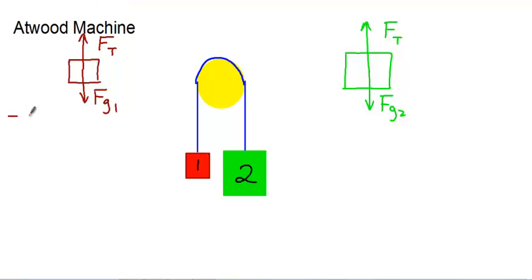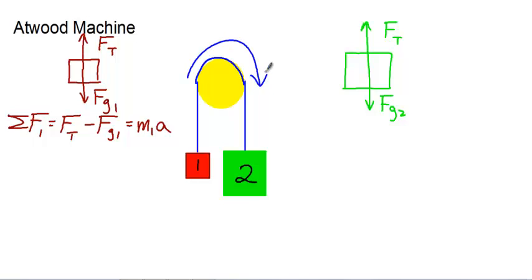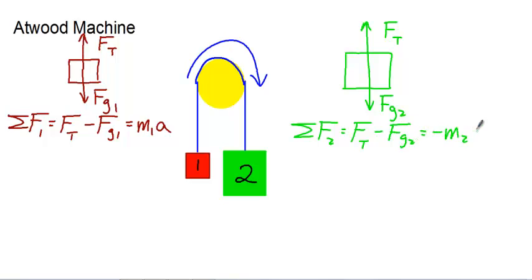We set up summation equations. For block one: F_T minus F_G1 equals M_1 times A. Common sense tells us the heavier mass falls and the lighter one rises, so block one accelerates upward in the same direction as tension — both positive. For block two: F_T minus F_G2 equals negative M_2·A, because block two accelerates downward. We could have made down positive, but since F_T on block one was defined as positive upward, block two's acceleration must be negative.